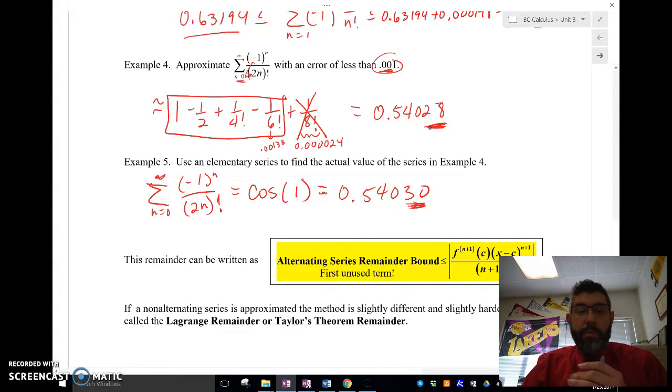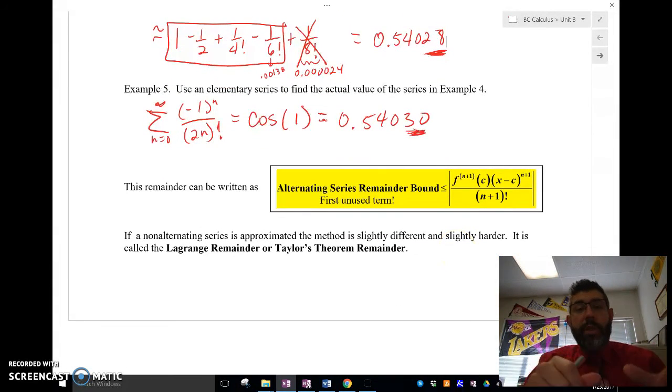So in general terms, folks, when we want to find the remainder, the error of an alternating series, that remainder is going to be less than or equal to the first unused term in that Taylor series.